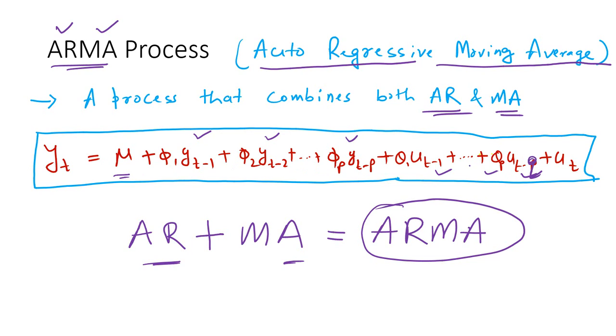We have got p lags for yt and then we have Q lags for the residual terms. We call this as a ARMA PQ series because we have got p AR terms and then Q MA terms. These represent the corresponding lags for the yt and ut respectively.